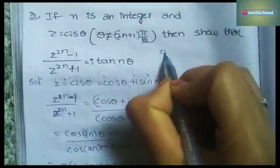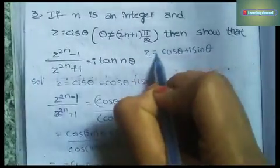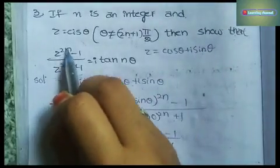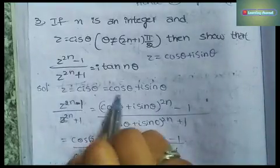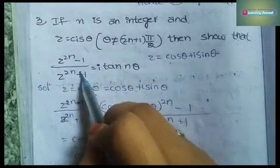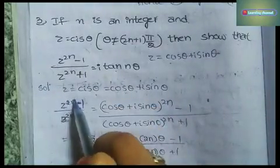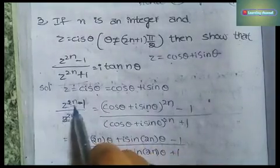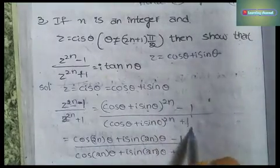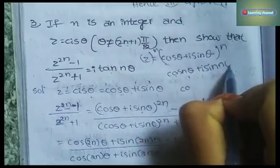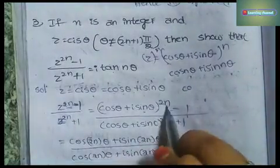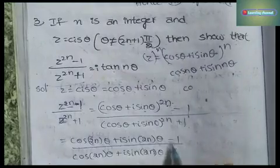The third problem: z = cis θ = cos θ + i sin θ. Show that (z^2n − 1)/(z^2n + 1) = i·tan(nθ). Take LHS: (cos θ + i sin θ)^2n = cos 2nθ + i sin 2nθ by De Moivre's Theorem. So LHS = (cos 2nθ + i sin 2nθ − 1)/(cos 2nθ + i sin 2nθ + 1).